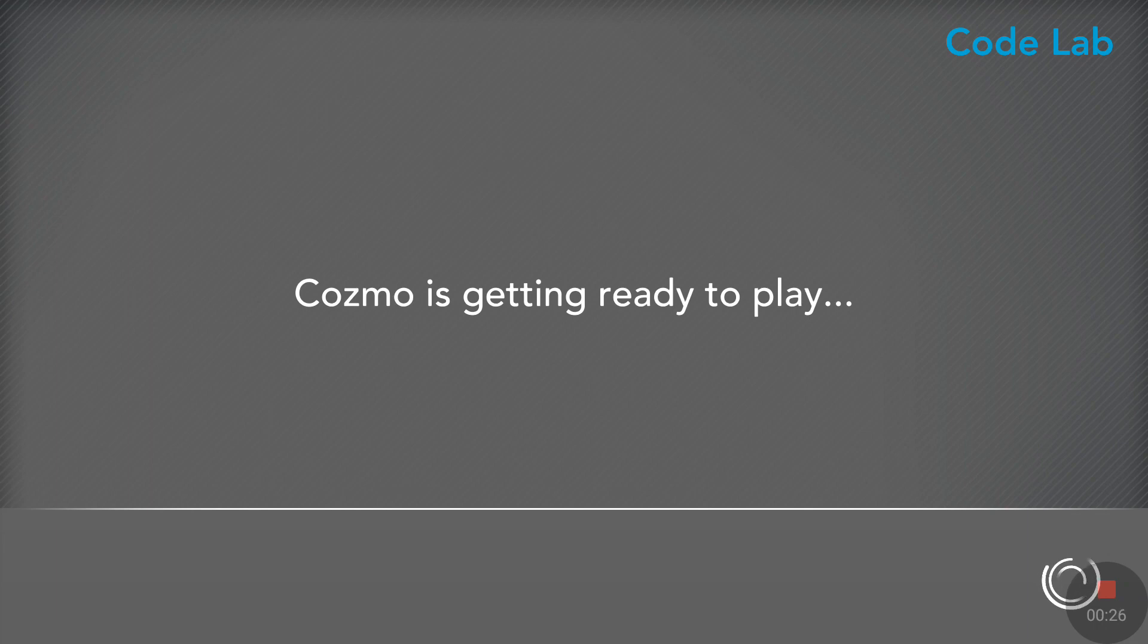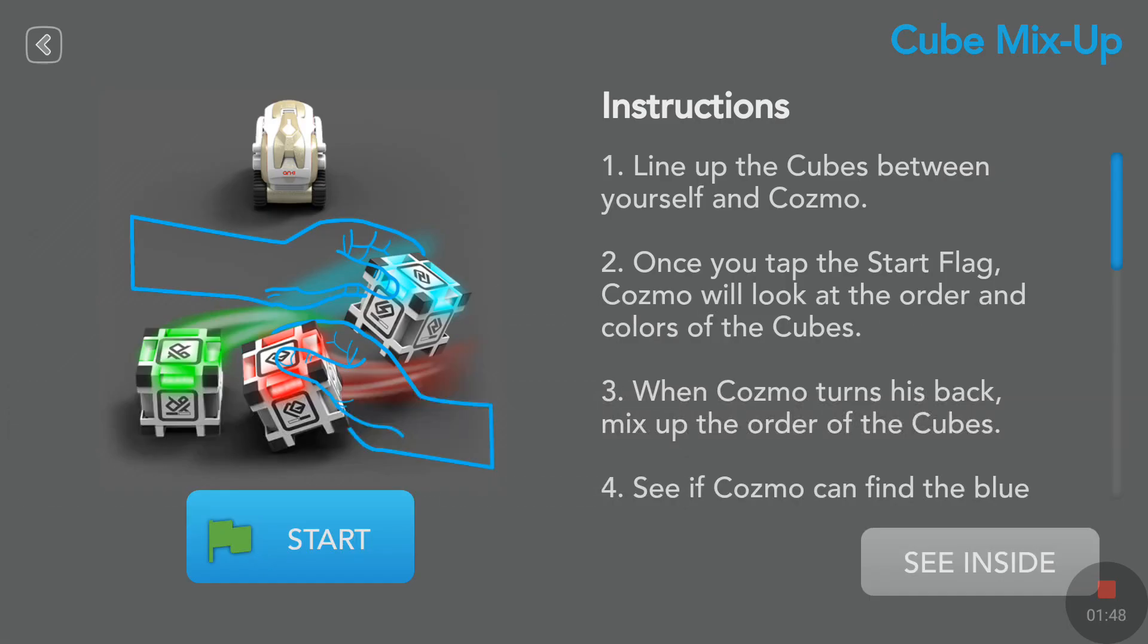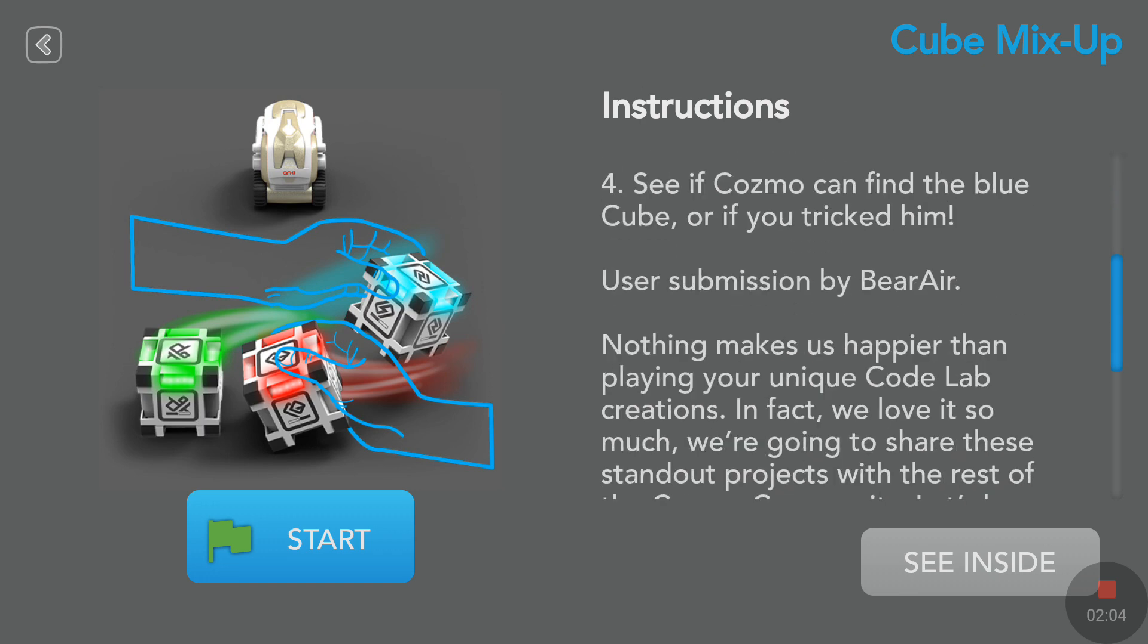As always, we will look at the instructions first. Line up the cubes between yourself and Cosmo. Once you tap the start flag, Cosmo will look at the order and colors of the cubes. When Cosmo turns his back, mix up the order of the cubes. See if Cosmo can find the blue cube or if you trick him.